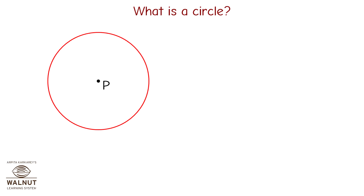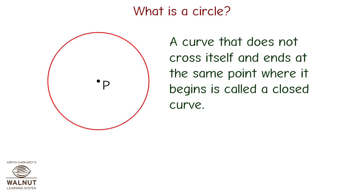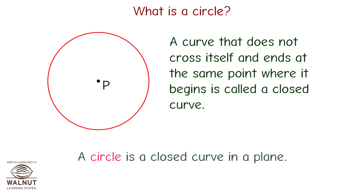What is a circle? A curve that does not cross itself and ends at the same point where it begins is called a closed curve. A circle is a closed curve in a plane. If you can draw it without lifting your pencil and you end up where you started, then it is a closed curve.